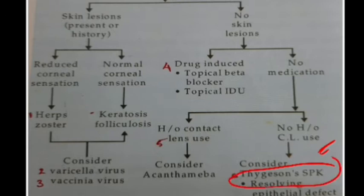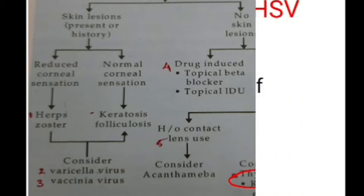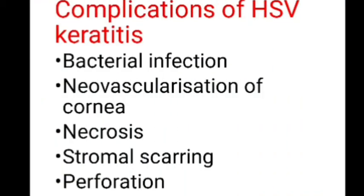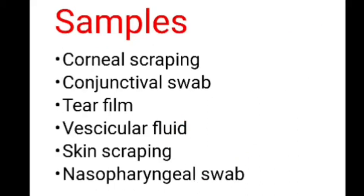This is the flowchart showing how to approach a patient with a dendritic ulcer. What are the complications HSV can leave? Following HSV keratitis, there can be secondary bacterial infection, neovascularization of the cornea, necrosis of the cornea, stromal scarring, and even perforation of the cornea.